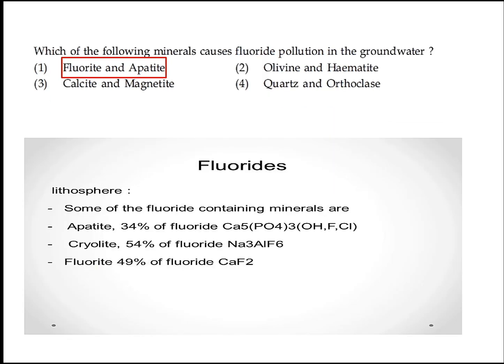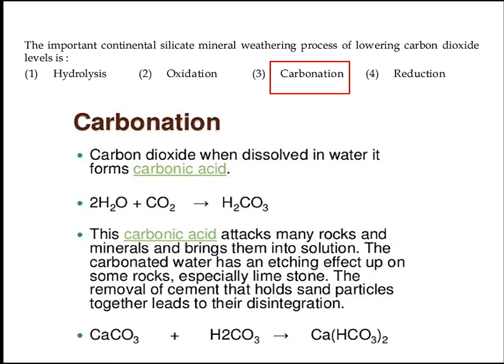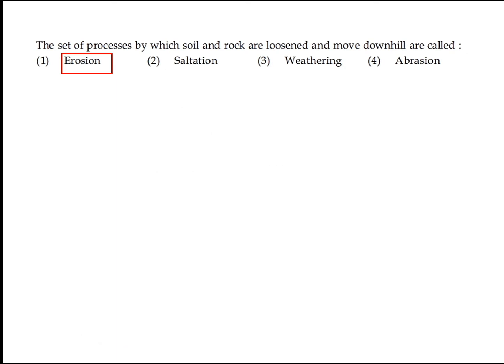Which of the following minerals causes fluoride pollution in groundwater? Fluorite and apatite. Option 1 is the right answer. The important continental silicate mineral weathering process for lowering carbon dioxide levels is carbonation. Option 3 is the right answer. The set of processes by which soil and rock are loosened and move downhill are called erosion. Option 1 is the right answer.